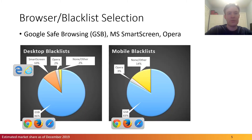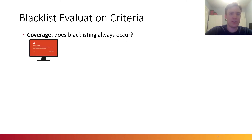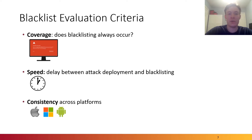In this research, we focus on evaluating the blacklists which protect today's major web browsers. These blacklists include Google Safe Browsing, Microsoft SmartScreen, and Opera. We propose three key criteria to evaluate blacklists: coverage is the percentage of known malicious websites that end up being blocked; speed is the delay between attack deployment and blacklisting; and then there's consistency across platforms. Any gaps in these metrics can have security implications which we want to evaluate in this research.